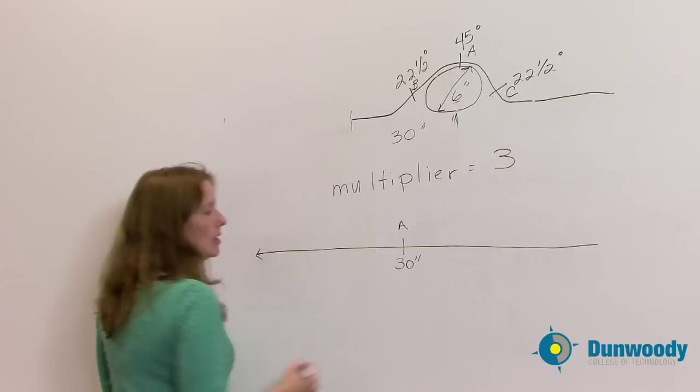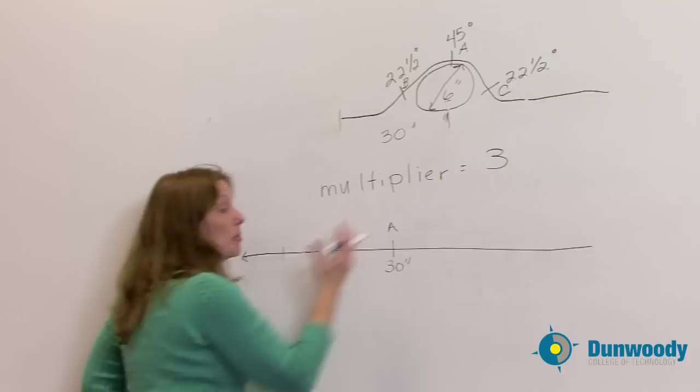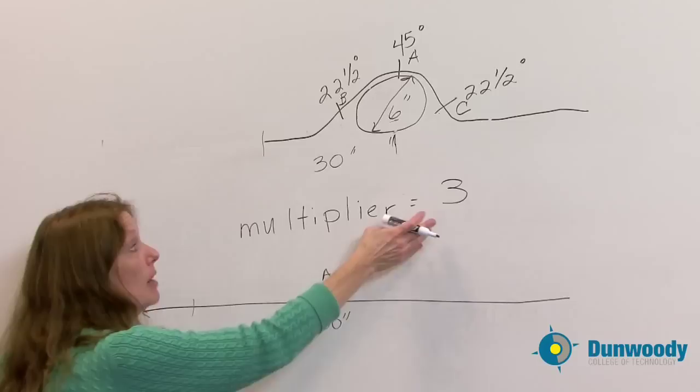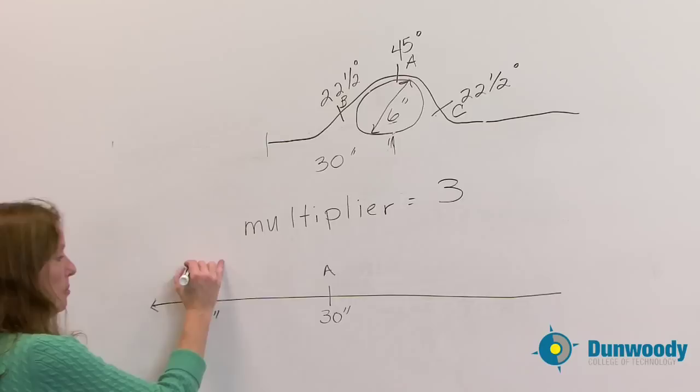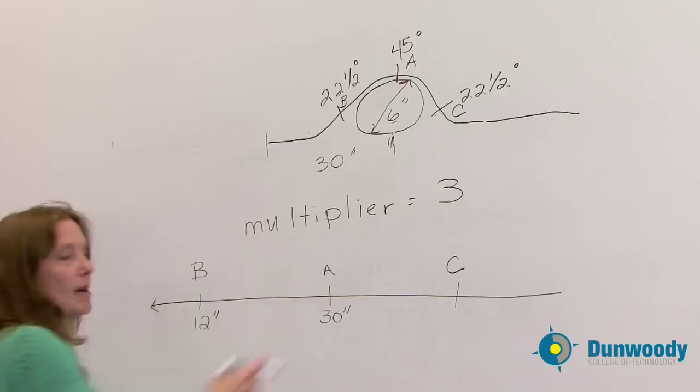And then I'm going to mark my mark B because it's a six inch obstruction and because I'm going to bend it all in the same direction, I'm going to take three times six, 18 inches. So I'm going to subtract 18 from the 30 to give me 12 inches. That would be my mark B.